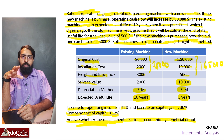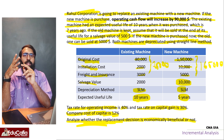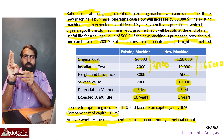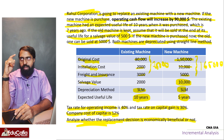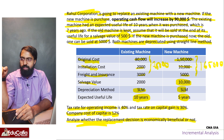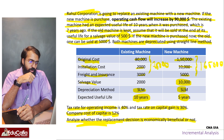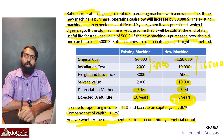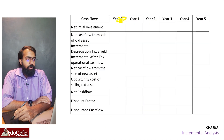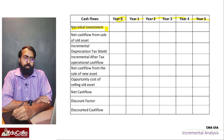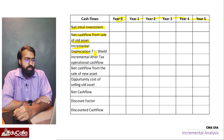We have cash flow - three steps. During the life. Disposal. You have three steps. These three steps are the headings: net initial investment, during the life, and disposal. The chart shows Year 0, 1, 2, 3, 4, 5. First one is net initial investment. The net cash flow from sale of old assets. Incremental depreciation tax shield.